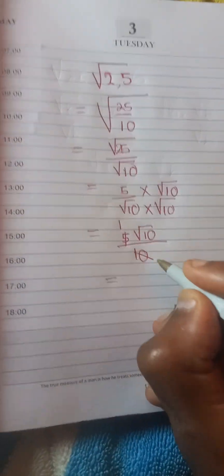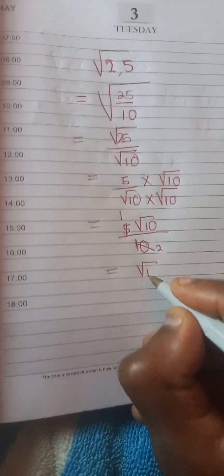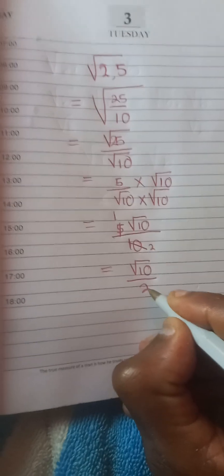Then you say 5 into 5, 1. 5 into 10, 2. So it's going to be square root of 10 over 2.